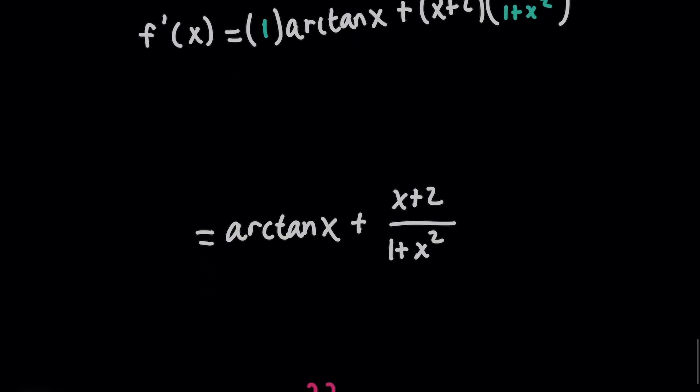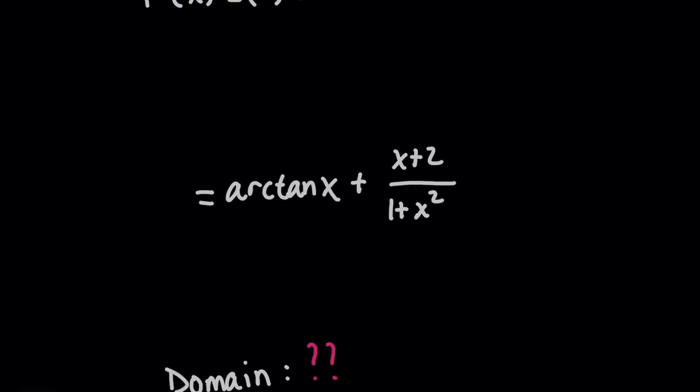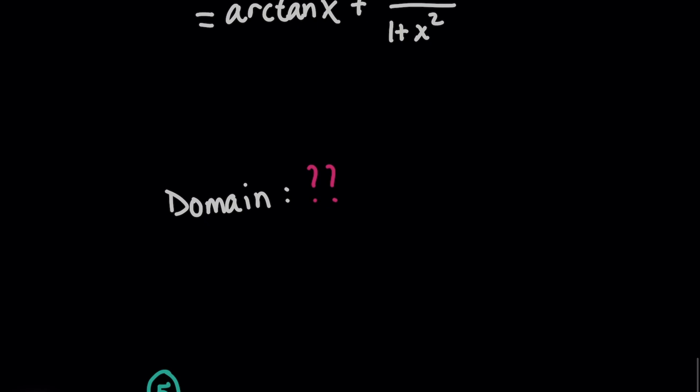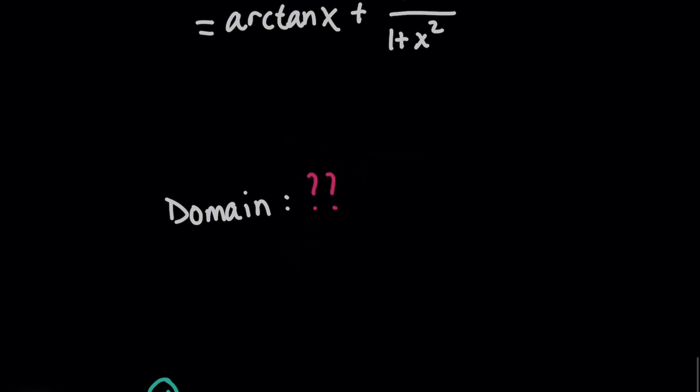And after combining the terms, you say that this is your final answer, and by inspection, if we're only dealing with real numbers, we know this denominator can never be zero, right? And so you might be saying, oh, well, the domain for this derivative function is that it's continuous everywhere, and that all real values of x are allowed.